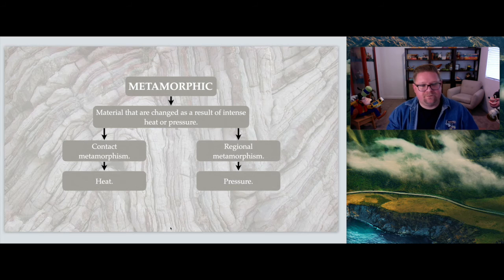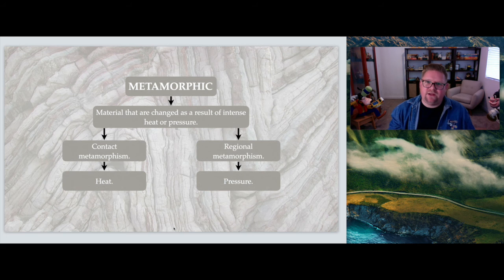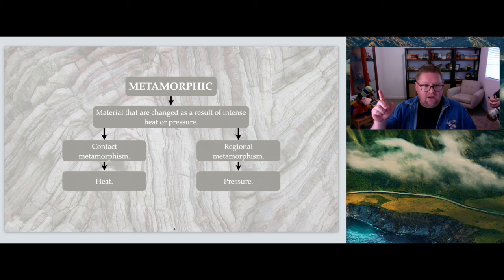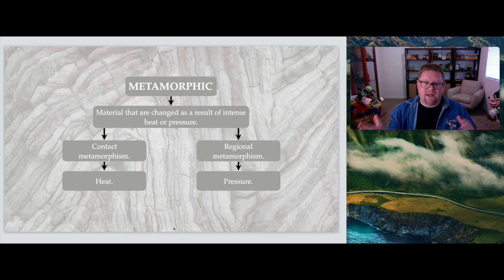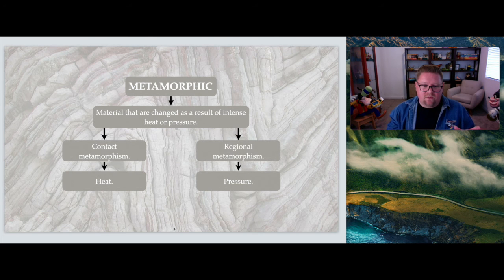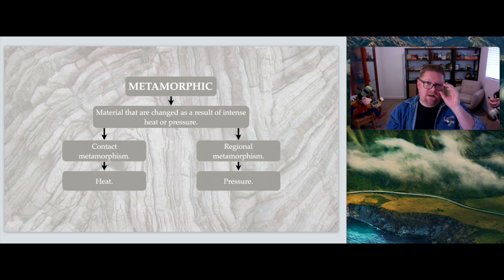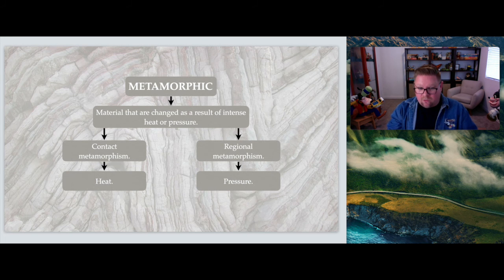Here we move on to our last slide here for your flow chart - metamorphic rocks. What are metamorphic rocks? Material that are changed as the result of intense heat or pressure. We can go in one of two different ways: it can either be contact metamorphism or regional metamorphism. They both involve heat and pressure, but contact has more heat, regional has more pressure, and that's what really separates those two within their boundaries. I hope that was a good crash course in metamorphic rocks. It's a little more complicated than just saying what did it used to be - there's different things we can look at with the structure, the pressure, what type of metamorphism was involved and so on.